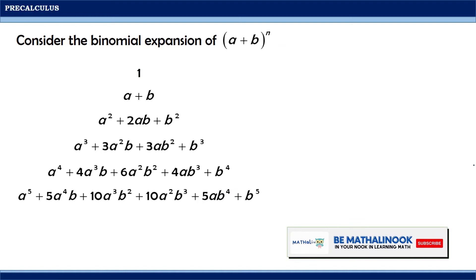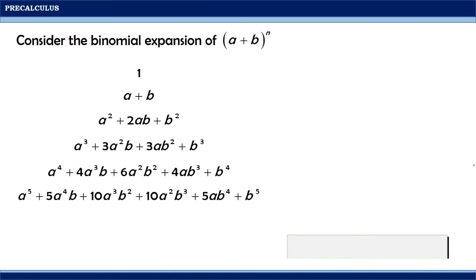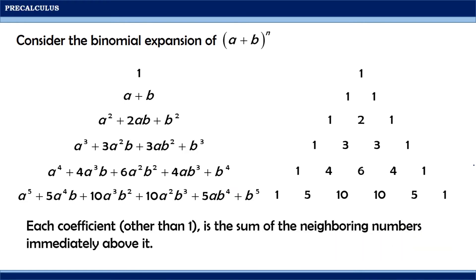Let us now consider the numerical coefficients of each term in these expressions. Notice that each coefficient other than 1 is the sum of the neighboring numbers immediately above it. For example, 1 + 1 = 2; 1 + 2 = 3; 1 + 3 = 4, 3 + 3 = 6, 3 + 1 = 4; 1 + 4 = 5, 4 + 6 = 10, 6 + 4 = 10, 4 + 1 = 5. These numerical coefficients form what we call Pascal's Triangle.